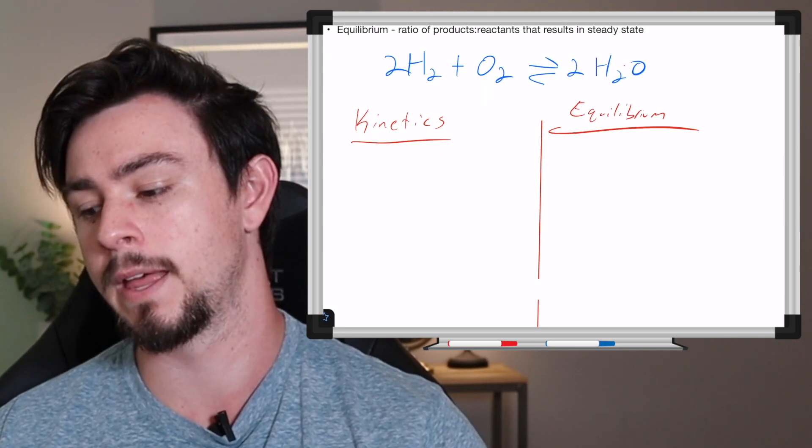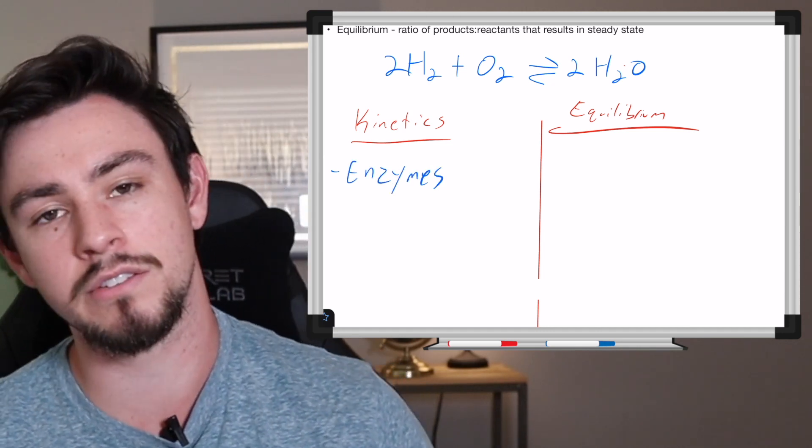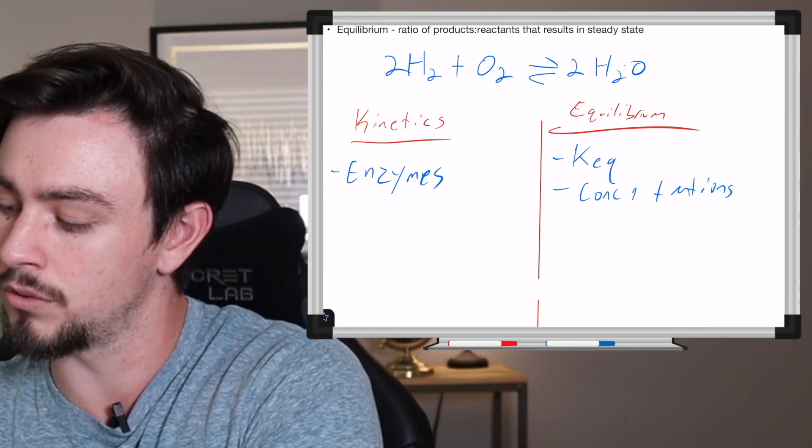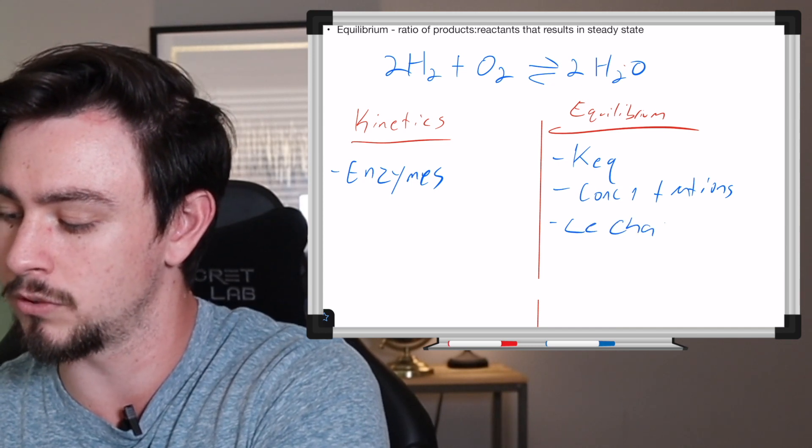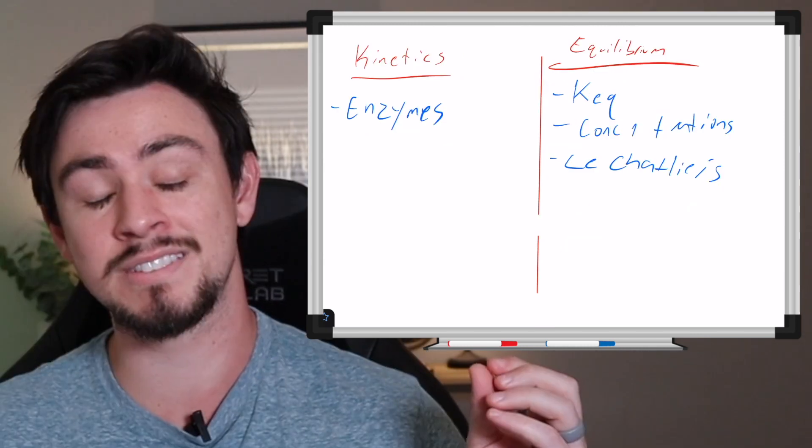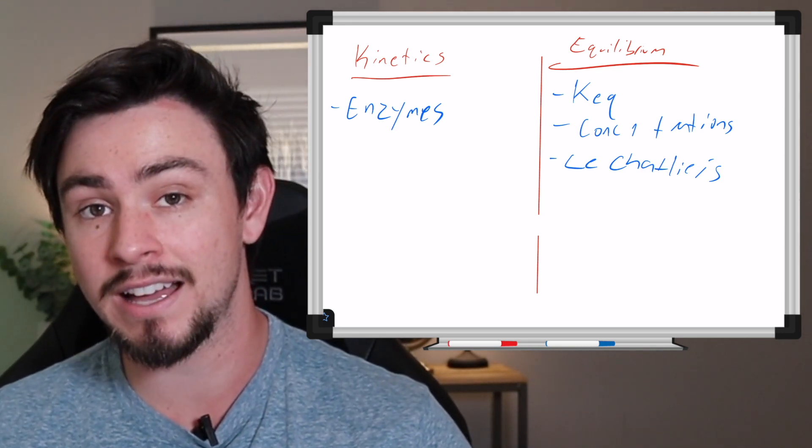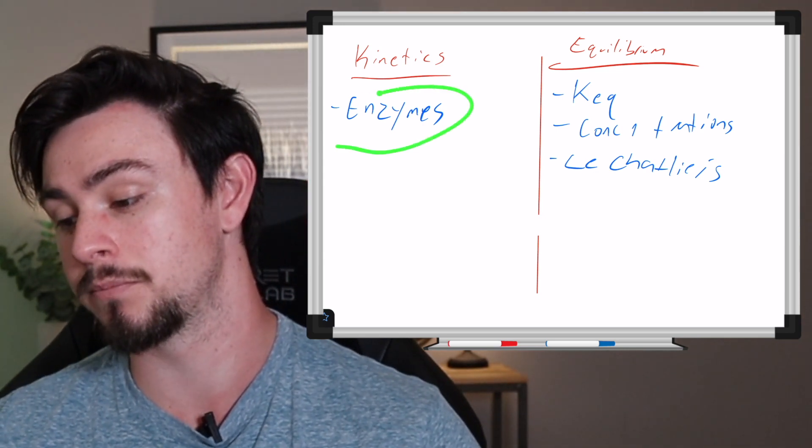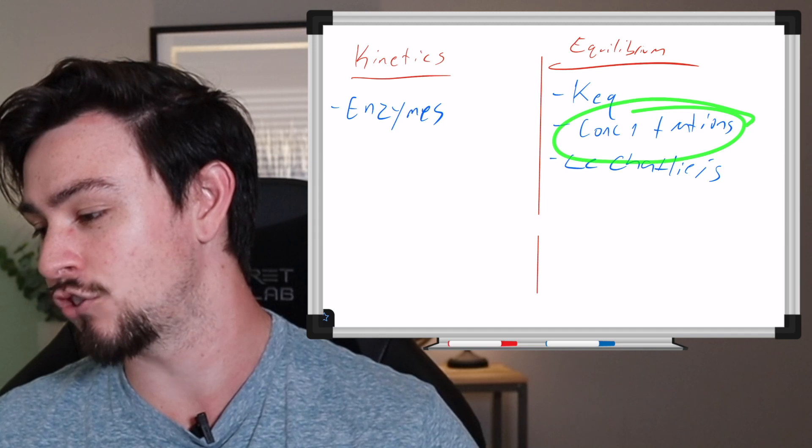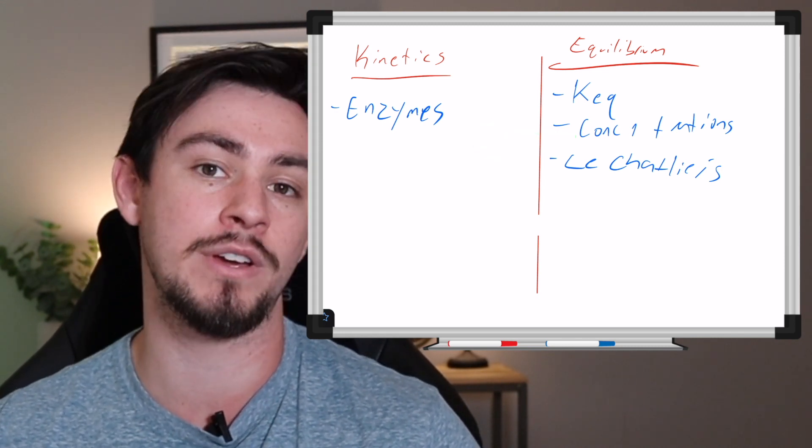But kinetics is talking about things like enzymes, speed, stuff like that. Whereas equilibrium is talking about stuff like KEQ, concentrations, and all of these we'll discuss in a later video. And then Le Chatelier's principle, which is probably the biggie when it comes to equilibrium. And that's actually a video that should be coming out shortly. So make sure you're subscribed. The part that's tested on the MCAT is the fact that things that increase the kinetics, namely like enzymes, generally do not have an impact on equilibrium.